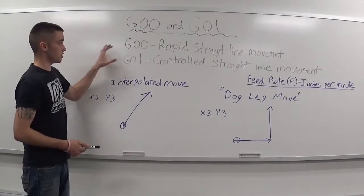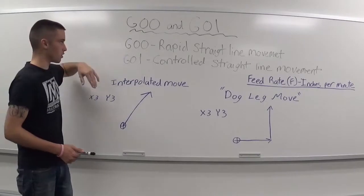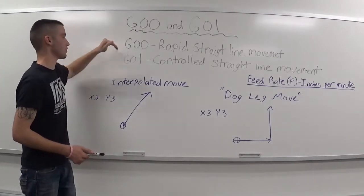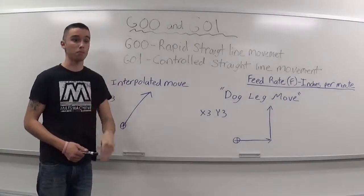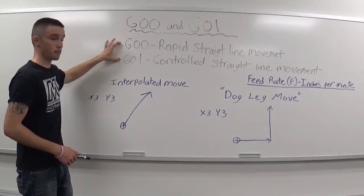G00 and G01, they're both modal commands, meaning in order to turn off a G00, you have to call up another G-code within that group. G00 and G01 happen to be in the same group.